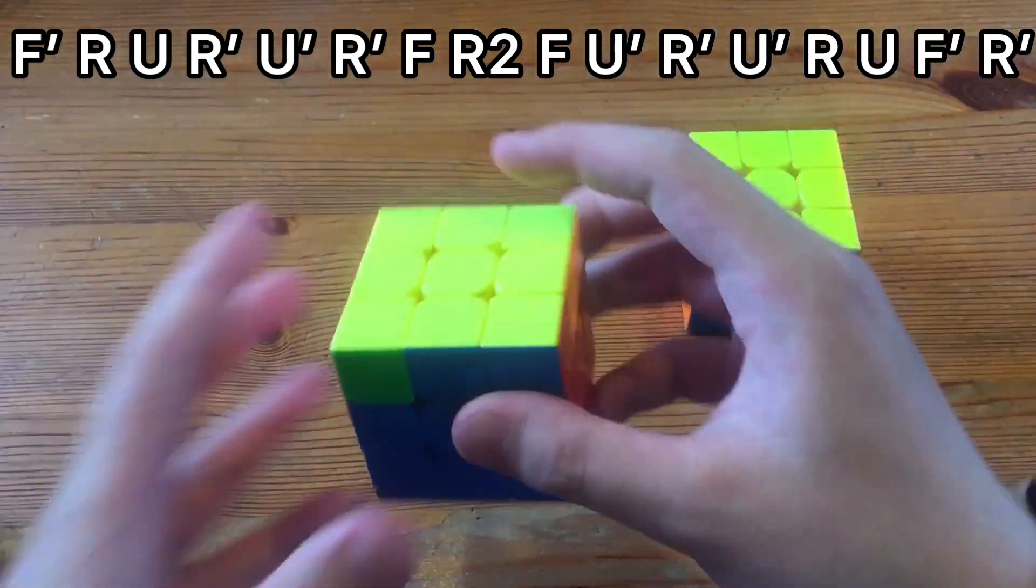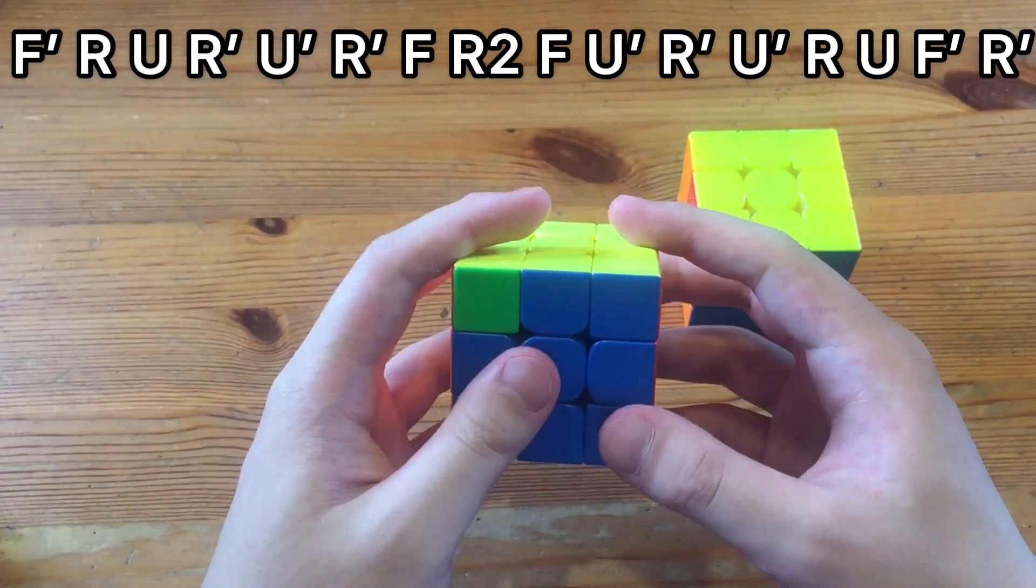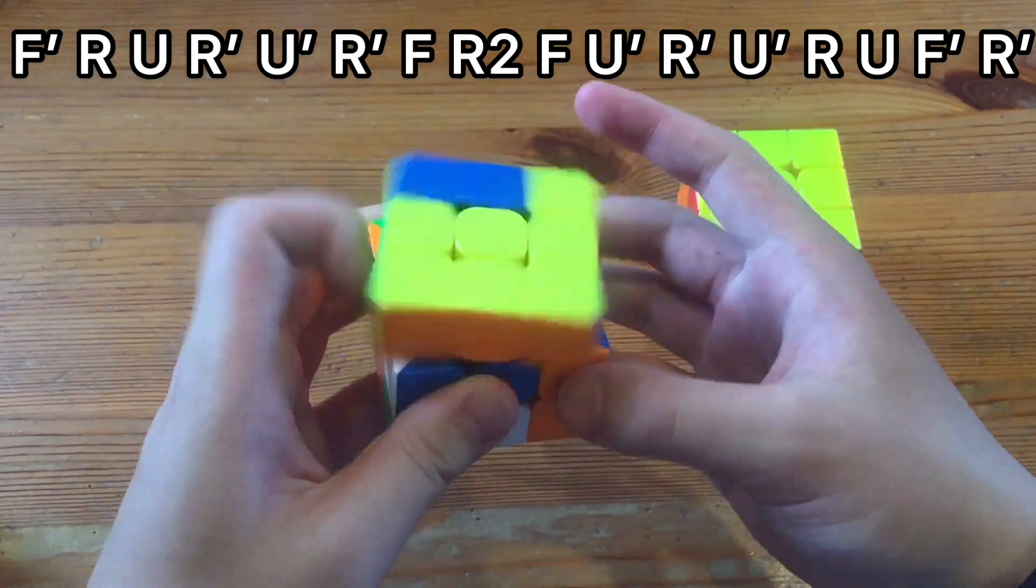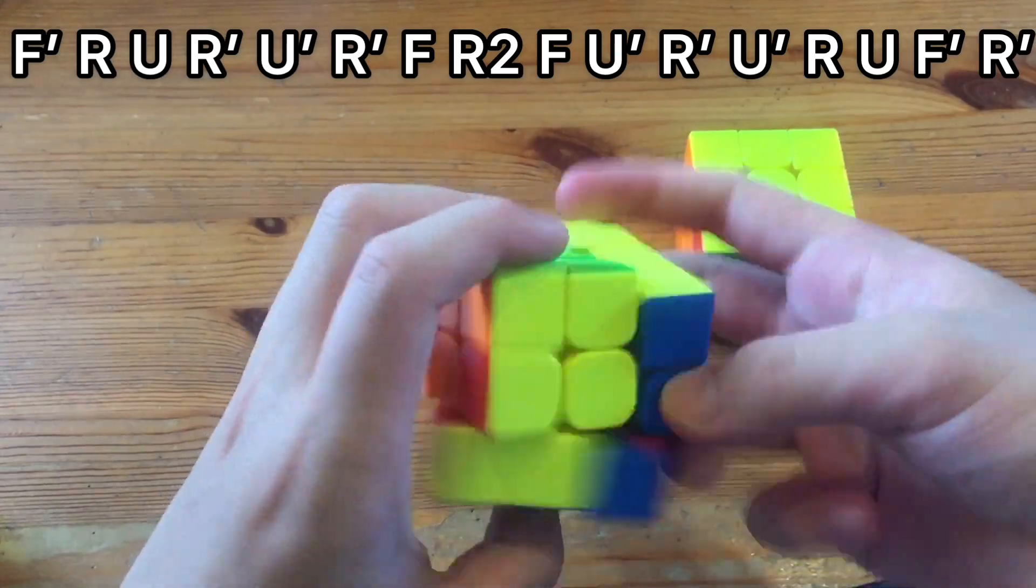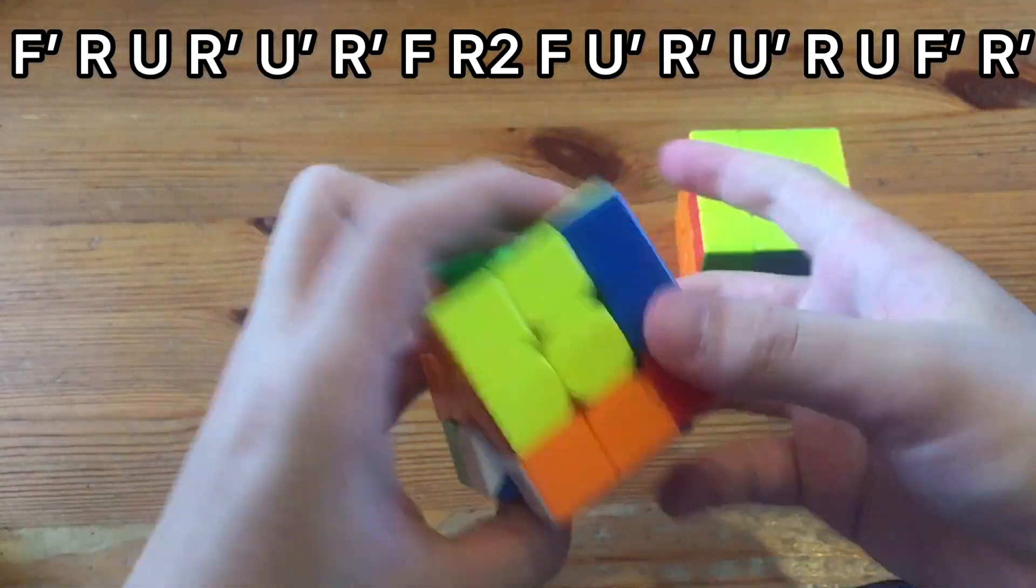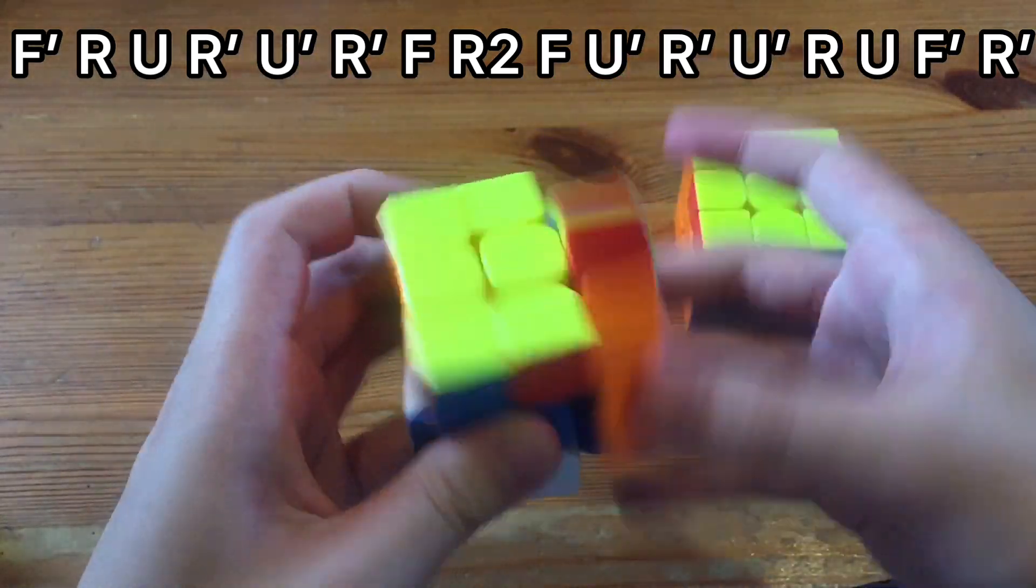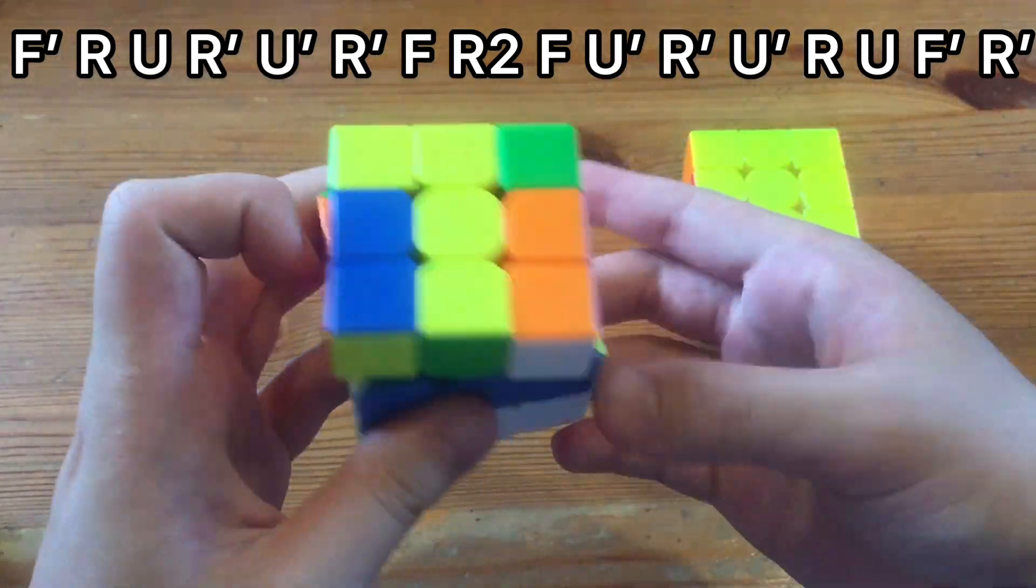And now the second way, how I would do it is left index and then pinch. And here you can just not double flick and it works fine as well. This is the execution I prefer actually. It's like in Tperm, I prefer just not double flicking and it's somehow faster.